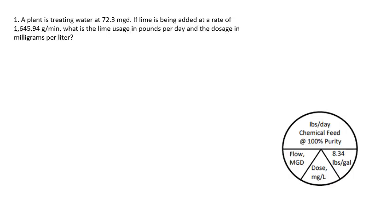Alright, question number 1. A plant is treating water at 72.3 million gallons a day. If lime is being added at a rate of 1,645.94 grams per minute, what is the lime usage in pounds per day and the dosage in milligrams per liter?